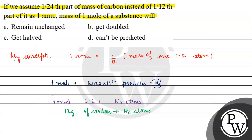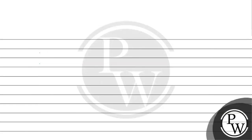The mass of one atom will be equal to 12 by Na grams. This is the mass of one atom. What is 1 amu? 1 amu is basically one-twelfth of the mass of one carbon atom. One carbon atom is equal to 12 by Na, so basically 1 amu is equal to 1 upon Na.